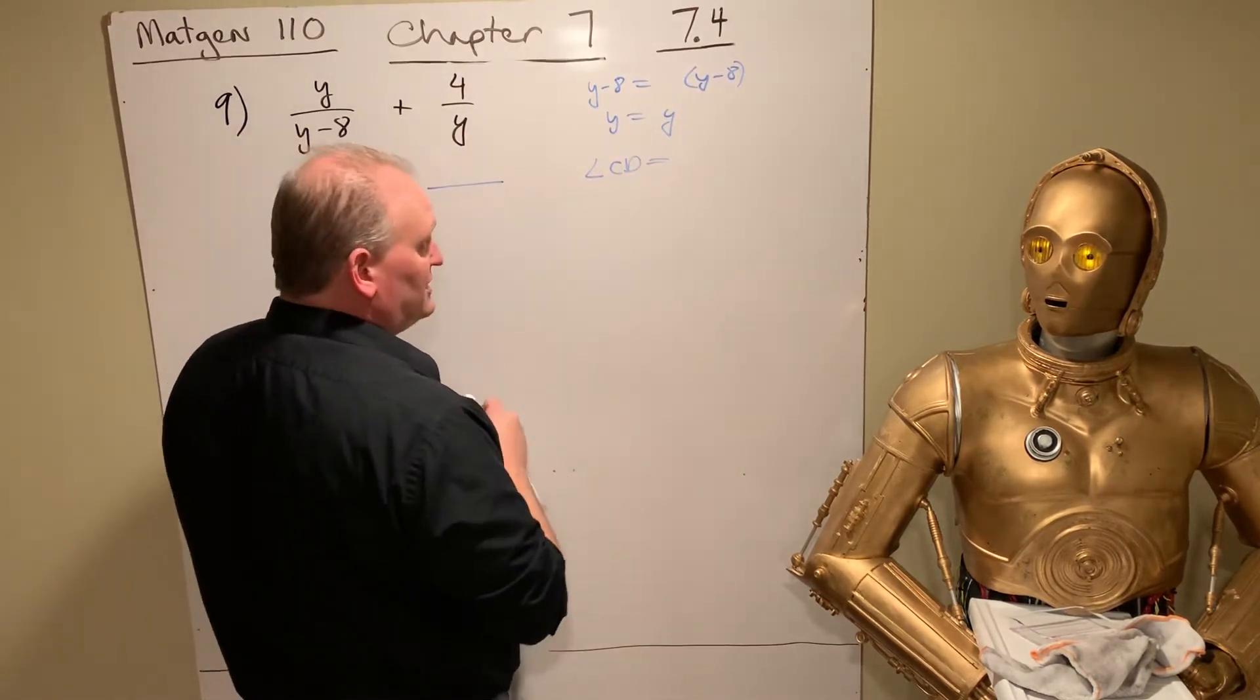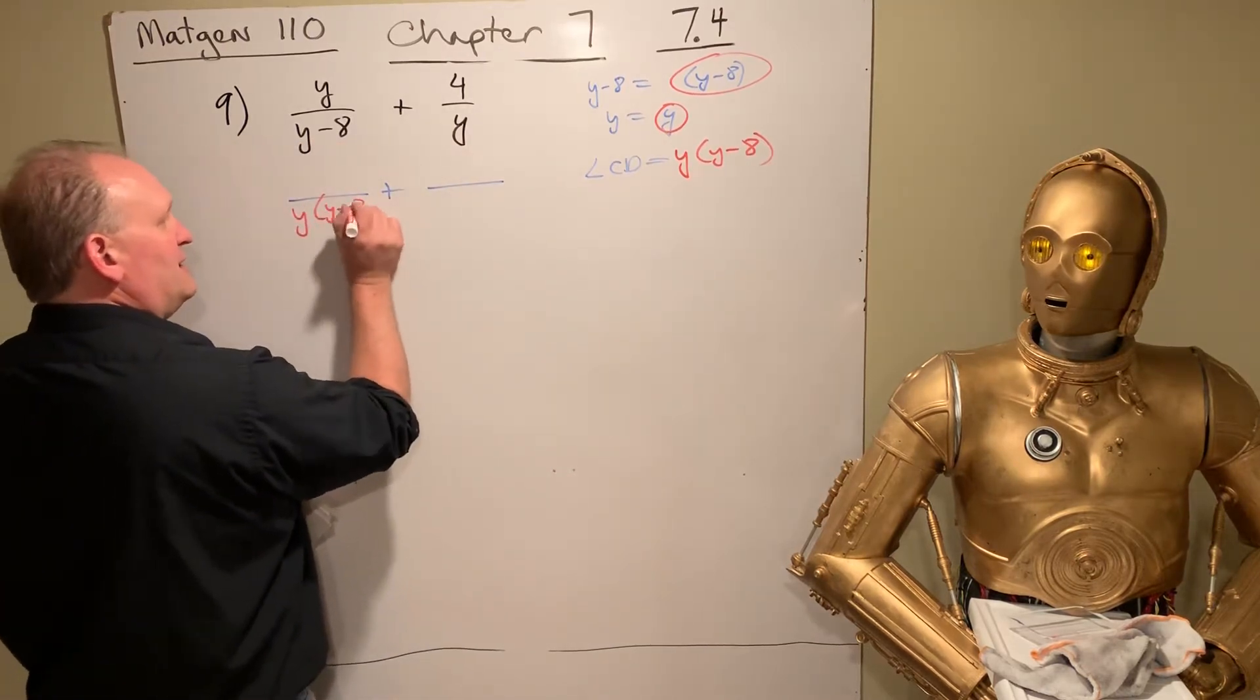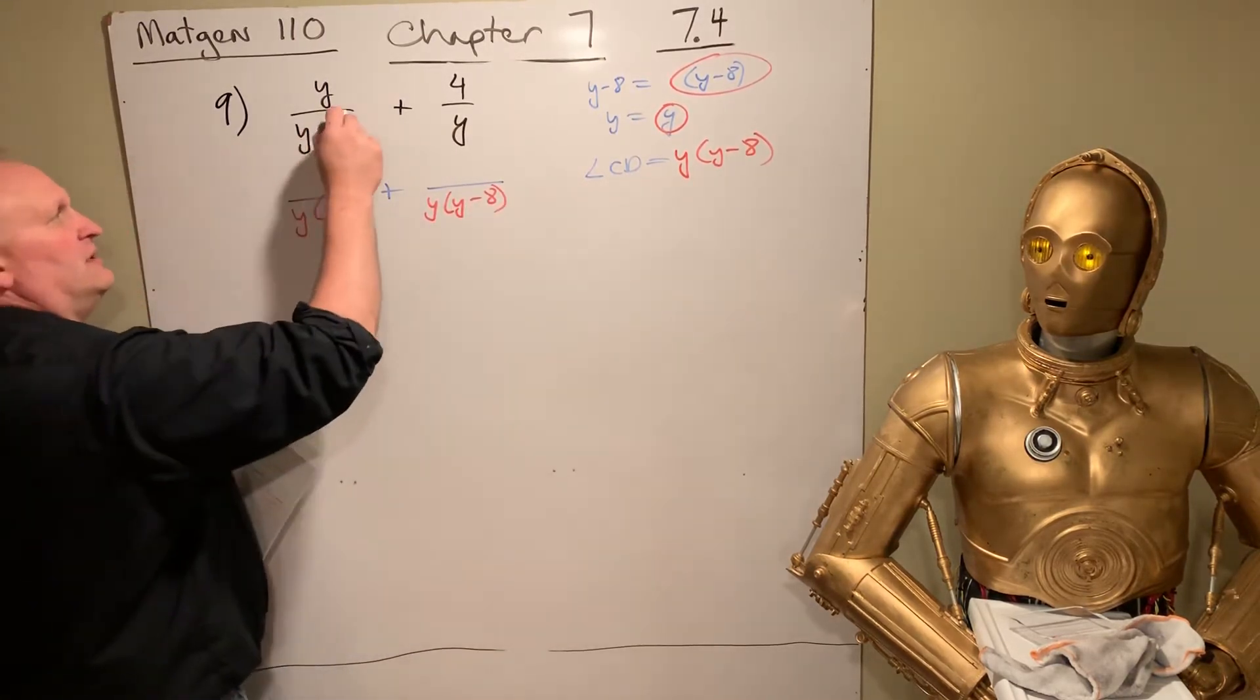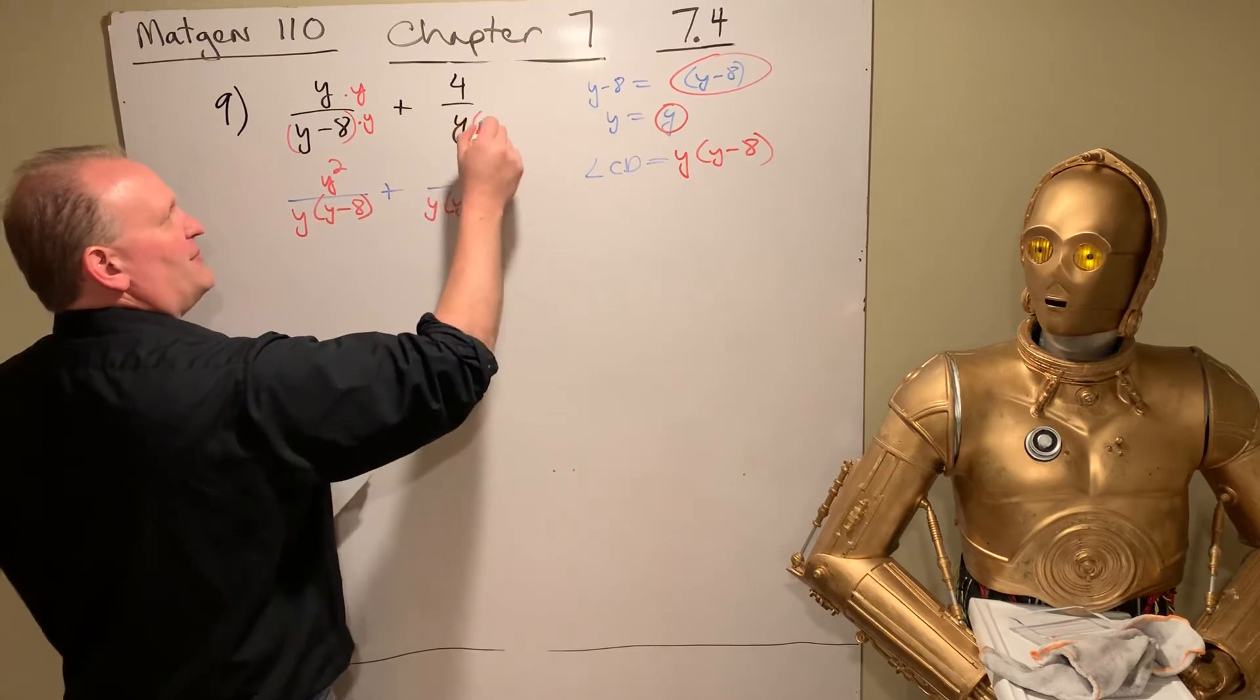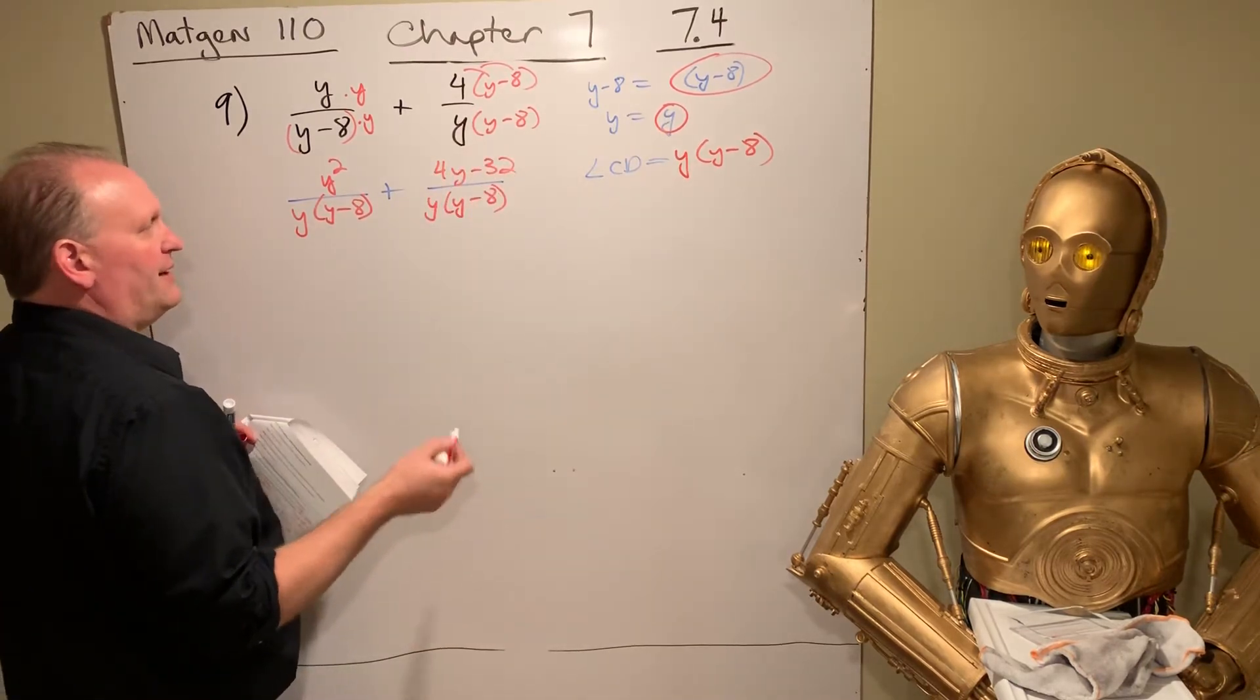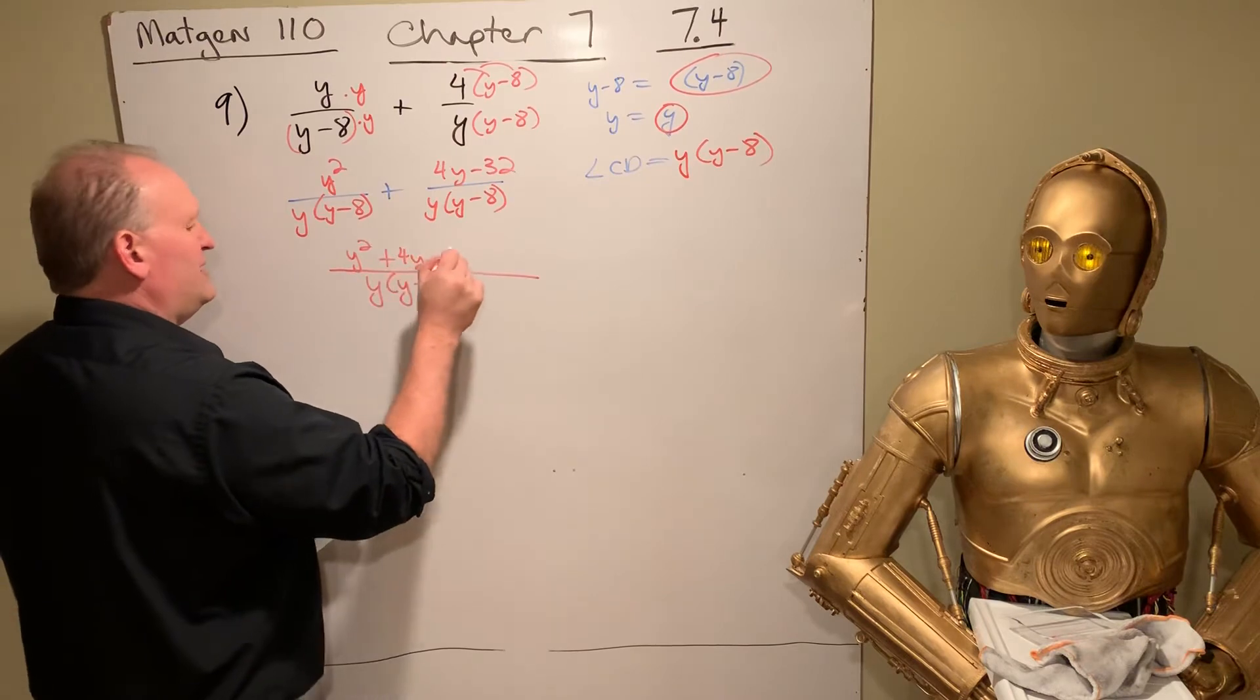So LCD, first you take what they have in common. Then you take the leftovers. Well, this is a leftover and this is a leftover. And so that's what we want. We want Y, Y minus 8. That's called relatively primed. That means they're primed to one another. So we multiply top and bottom here by Y. We multiply top and bottom here by Y minus 8.